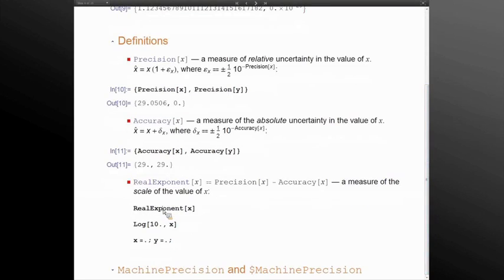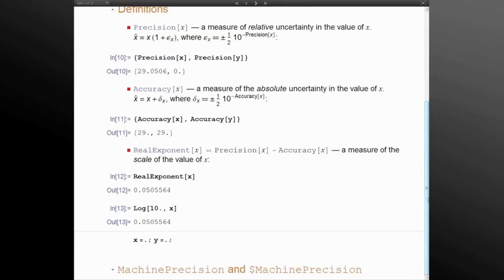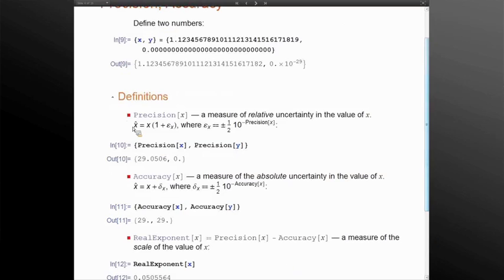The real exponent for zero is not defined. The real exponent of X, which is the difference of those two numbers, will give you the same thing as a base 10 logarithm of the number.